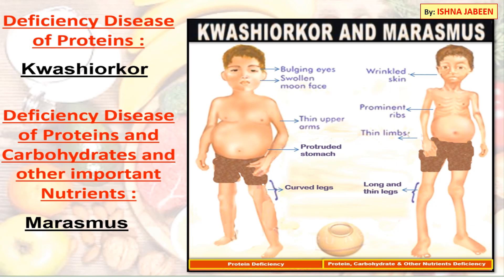Deficiency disease of proteins is kwashiorkor. If a person does not get enough protein in their diet, they suffer from kwashiorkor. Symptoms include bulging eyes, swollen face, thin upper arms, swollen stomach, and curved legs. If the diet is deficient in both proteins, carbohydrates, and other important nutrients for a long time, the person suffers from marasmus. Symptoms include wrinkled skin, prominent ribs, thin limbs, and long thin legs.